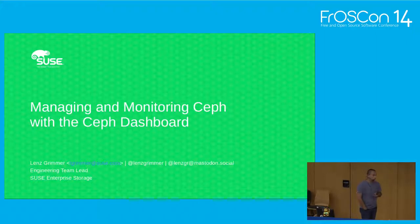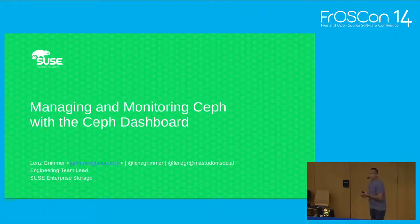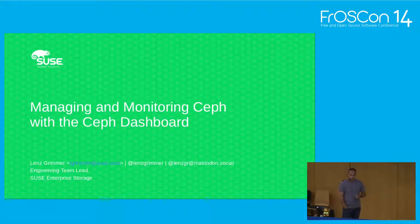That should be sufficient for an overview. Ceph.io is the website where you can learn more — it's a regular open source project that originated in a company called Ink Tank, which was later acquired by Red Hat. Nowadays, several companies including SUSE, Red Hat, Canonical, and others are contributing, along with a growing community. Ceph usually does a new major release every 9 to 12 months, though the cadence is changing — they are now looking at doing yearly releases again.